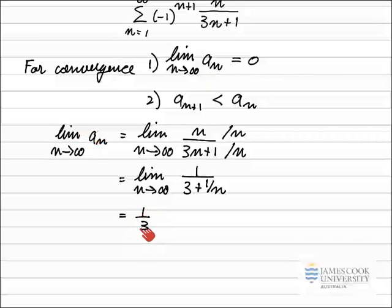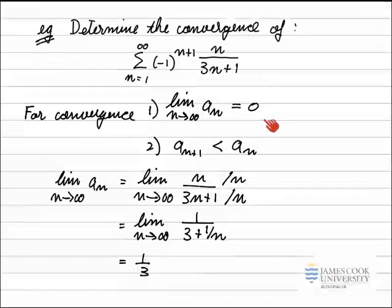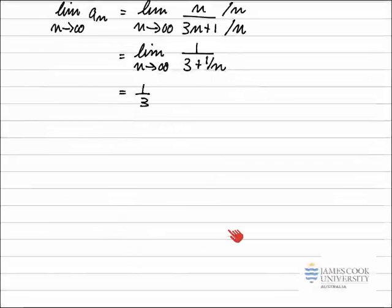The first condition requires this limit to equal 0. Anything besides 0 means the condition is not satisfied, and the series does not converge. Since the limit equals 1/3, the first condition is not satisfied for the alternating series test, so the alternating series does not converge — and therefore the series diverges.